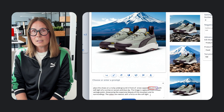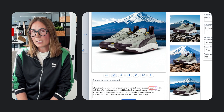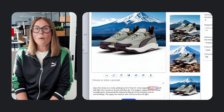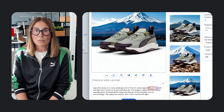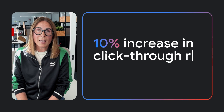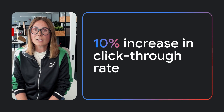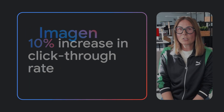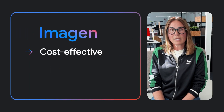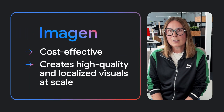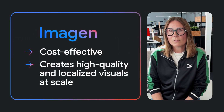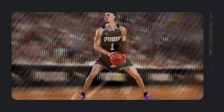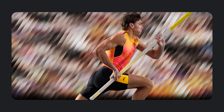Ultimately, this makes for a better digital shopping experience for our customers. Puma India, for example, has already seen a 10% increase in our click-through rate. Imagen is cost-effective, creates high-quality and localized visuals at scale. So it's been the perfect choice for us.